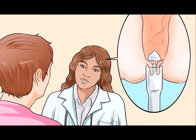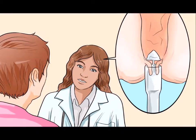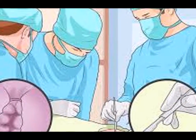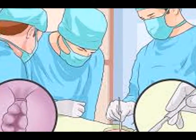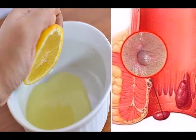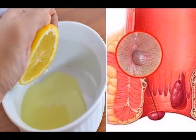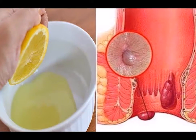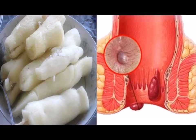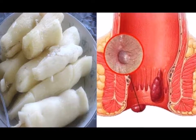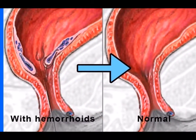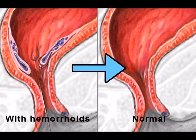How to shrink hemorrhoids fast. Hemorrhoids occur when the veins in the anal canal swell. Swelling happens when too much pressure is exerted on the veins in the pelvis and the rectum. The veins fill with blood to control bowel movements, so if you strain or sit for too long on the toilet, you are exerting more pressure on the veins, which eventually becomes stretchy. This stretchiness causes hemorrhoids.